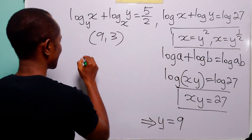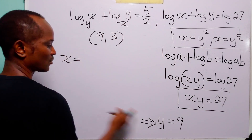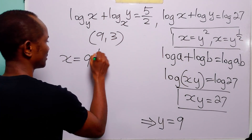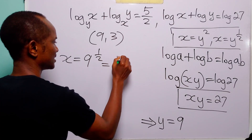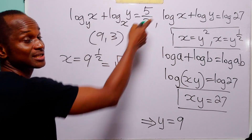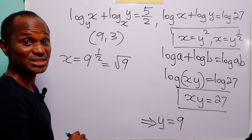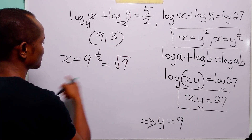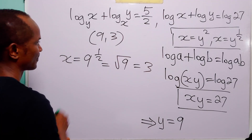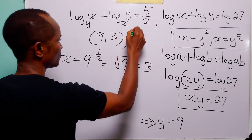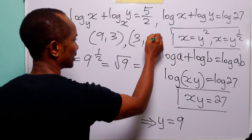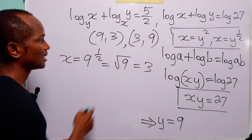We have y equals 9, and x equals 9 to the power half, that is the square root of 9. Since we are dealing with logarithms we only take the positive square root, so x equals 3. In the second case, x equals 3 and y equals 9.